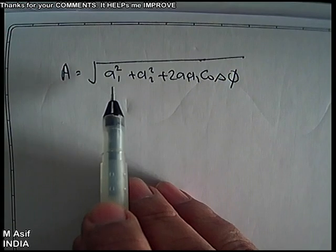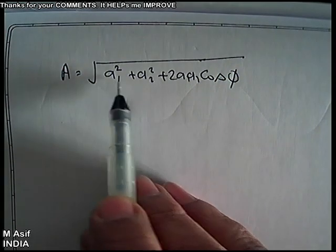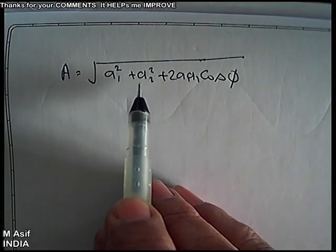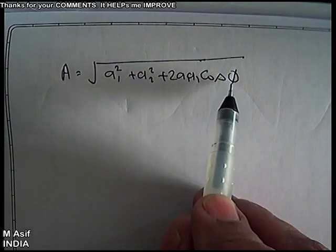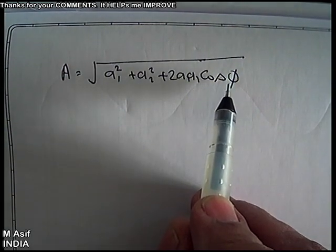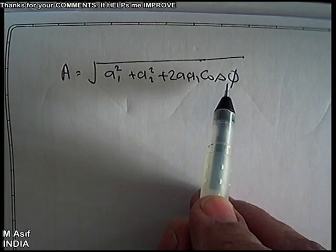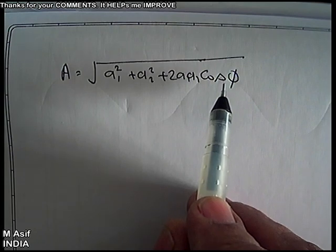The resultant amplitude depends on the amplitudes of the superimposing waves, and also on the phase difference between the two waves — at what phase difference the two waves meet each other.